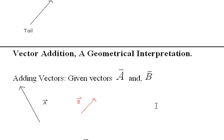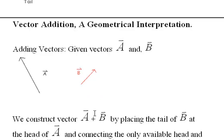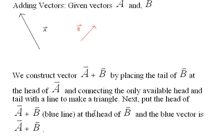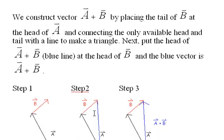And adding vectors, the geometric interpretation. Adding vectors. Given a and b, here's a black a and a red b, we can construct a plus b by placing the tail, placing the tail of b at the head of a and connecting the only available head and tail with a line to make a triangle.